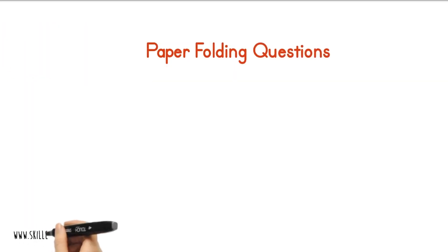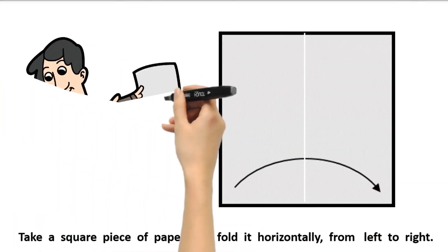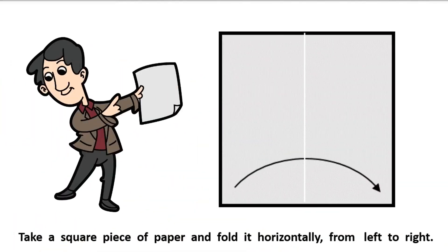Paper folding questions. Number 2. Take a square piece of paper and fold it horizontally, from left to right. You'll get this.